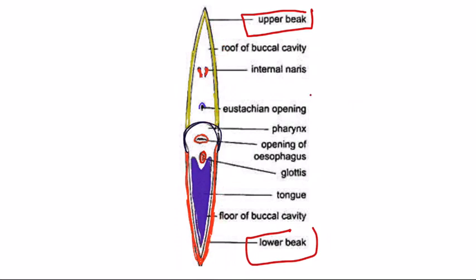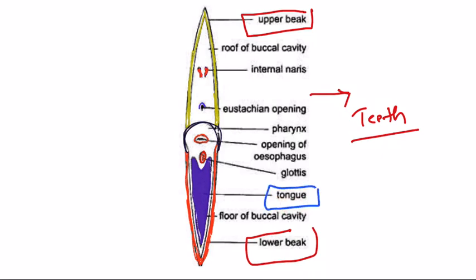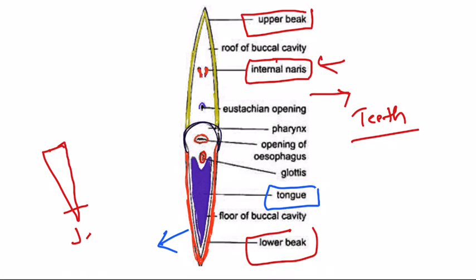An interesting point about the bird's mouth is that teeth are absent. The mouth opens into the buccal cavity. On the floor of the buccal cavity, a tongue is present. This tongue is a triangular structure with a pointed tip. It is present on the floor of the buccal cavity.